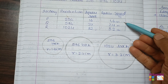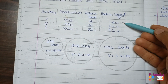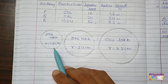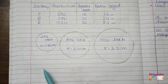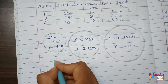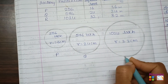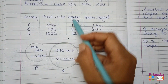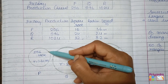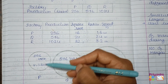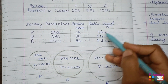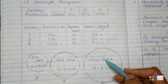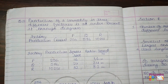After taking radii of 1.6 cm, 2.4 cm, and 3.2 cm with a ruler, the three circles are ready representing factory P, factory Q, and factory R respectively. At the end, don't forget to write the production value and the radius taken for each circle.